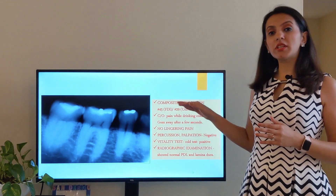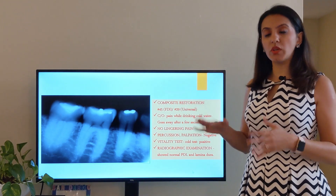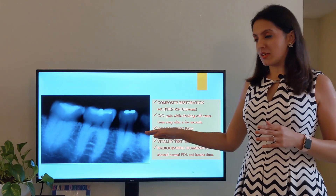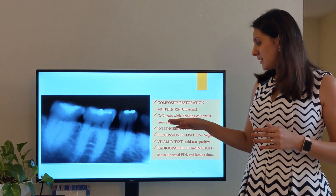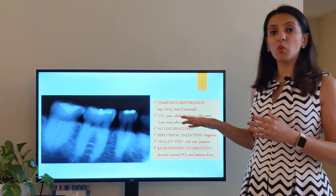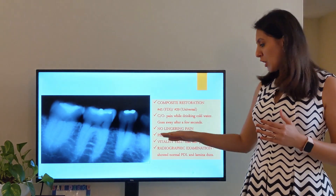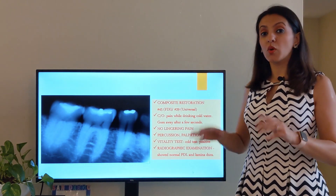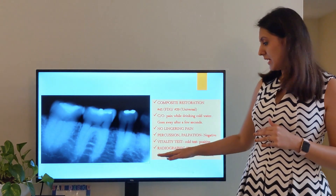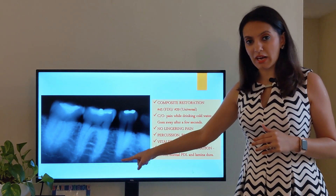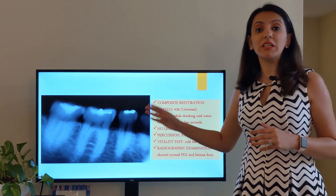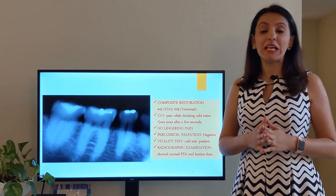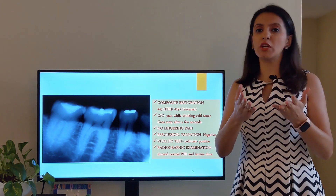Here is a case of tooth number 29 according to the universal numbering system — or tooth number 45 according to the FDI numbering system. This patient had a composite restoration and complained of pain while drinking cold water, which went away within a few seconds. No lingering pain. Percussion and palpation tests were negative. The cold vitality test was positive but resolved within a few seconds. The radiograph showed normal periodontal ligament and normal lamina dura. These five diagnostic points confirmed reversible pulpitis. The slide for these five points is attached at the end of the lecture.